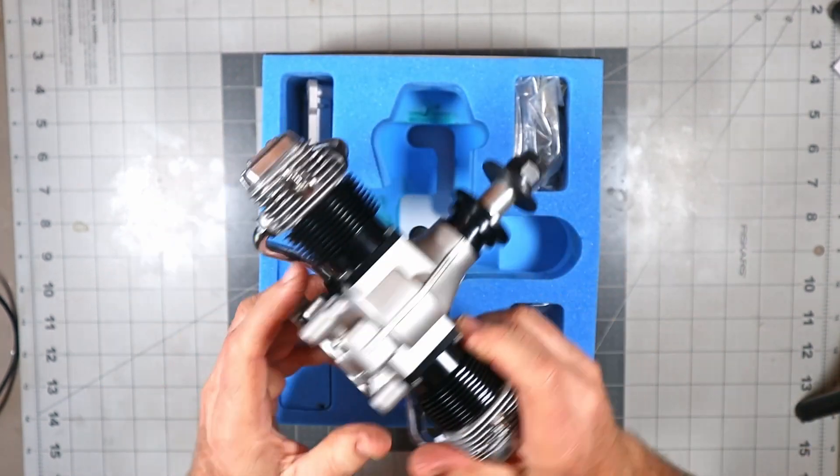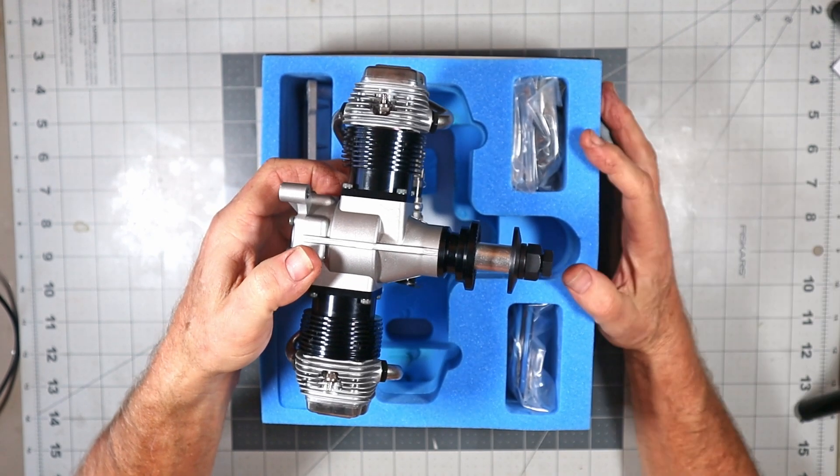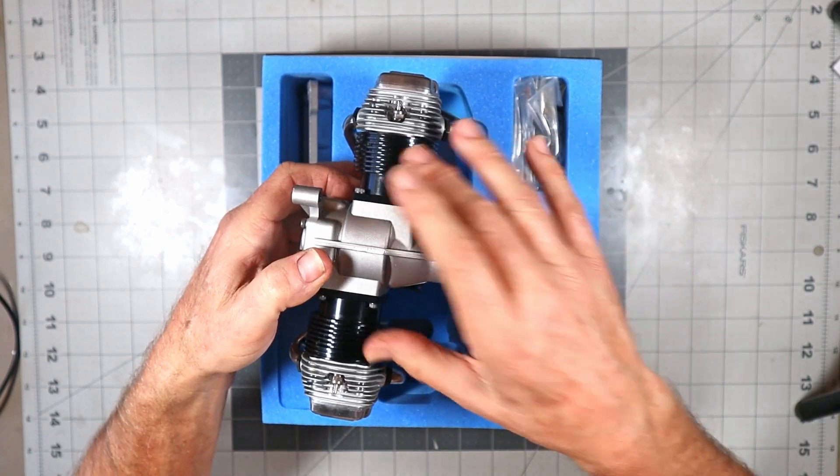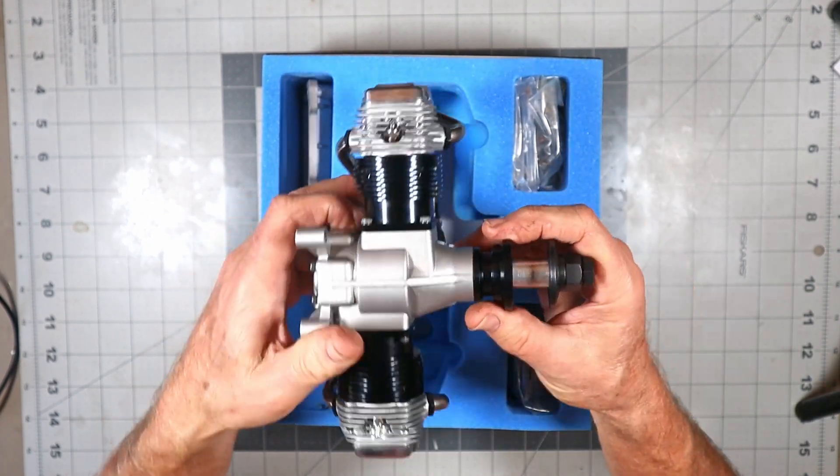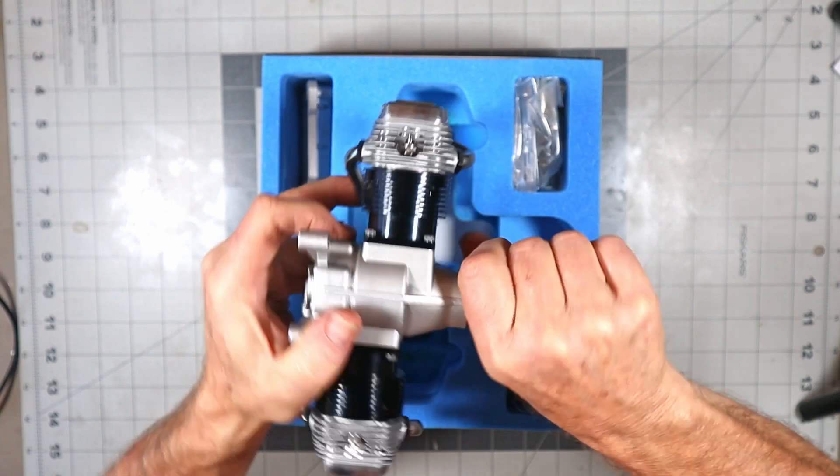Why do they call it Gemini? I started thinking and realized it's because the constellation Gemini is known as the Twins. Well there you go - you've got twins, it's a twin engine, so that's why this is titled the Gemini. Then I started thinking about the other names.